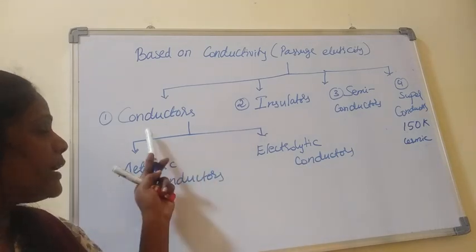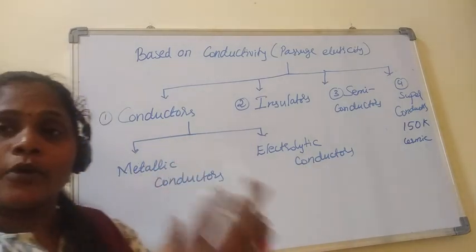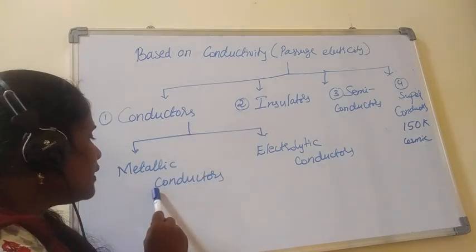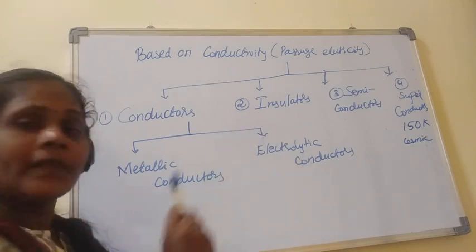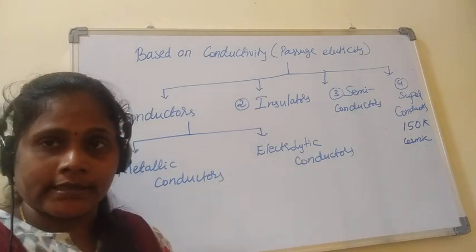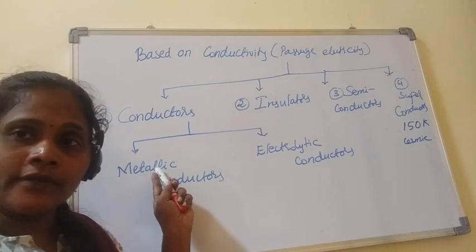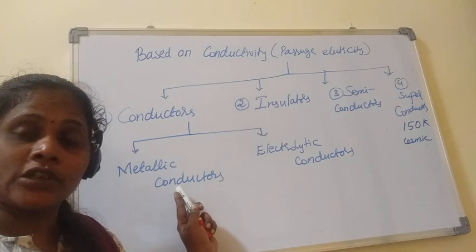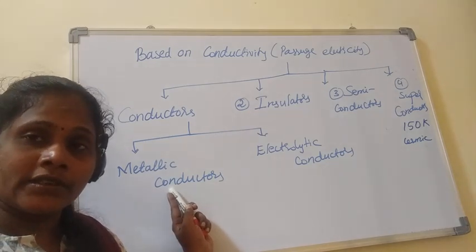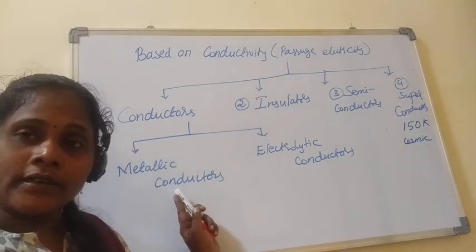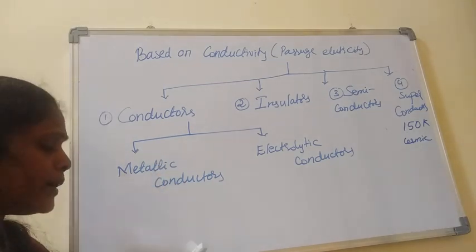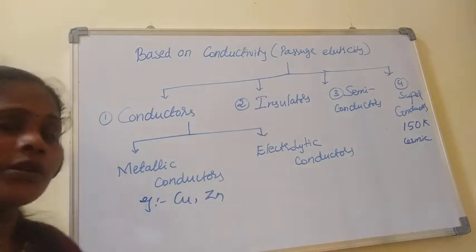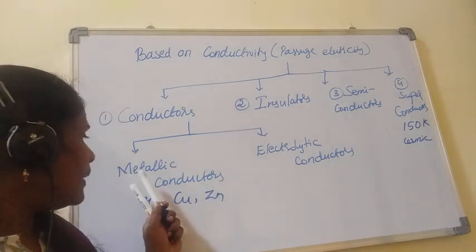Now let us discuss conductors. These are important terms we should understand. Conductors are of two types: metallic conductors and electrolytic conductors. Metallic conductors are metallic substances which allow the passage of electricity through them. Examples: copper, zinc, aluminium — these are all examples of metallic conductors.